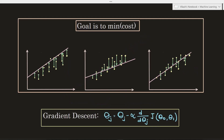Gradient descent looks complicated but it is a straightforward thing. Its goal is to minimize the cost — the total loss — with respect to the straight line we are trying to draw. We have three examples for a better understanding. In the first diagram, we have drawn a straight line, but it is not the best option because the loss with respect to each and every data point is too much.